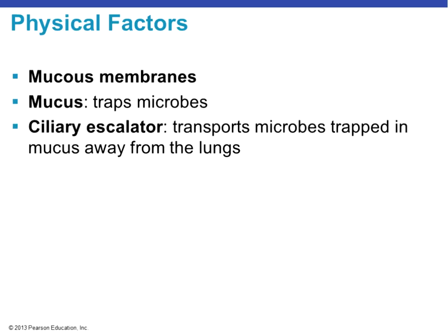A ciliary escalator is in your trachea. The trachea has pseudostratified ciliated columnar epithelial cells, and those cilia beat in one direction. Their job is to transport microbes up and away from the sterile environment of your lungs. When you clear your throat and swallow, you're tickling those cilia, pushing microbes up past the epiglottis and into your stomach — a very acidic environment less hospitable for microorganisms, where they're likely to be killed by hydrochloric acid and other enzymatic juices.